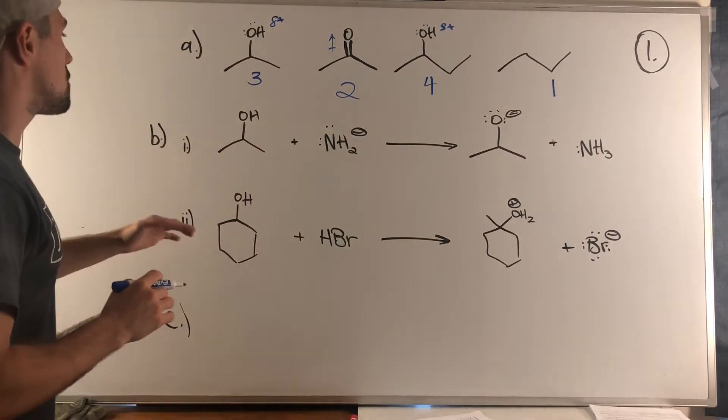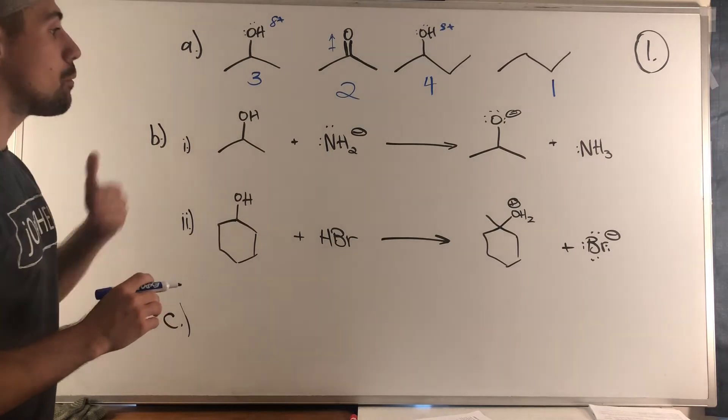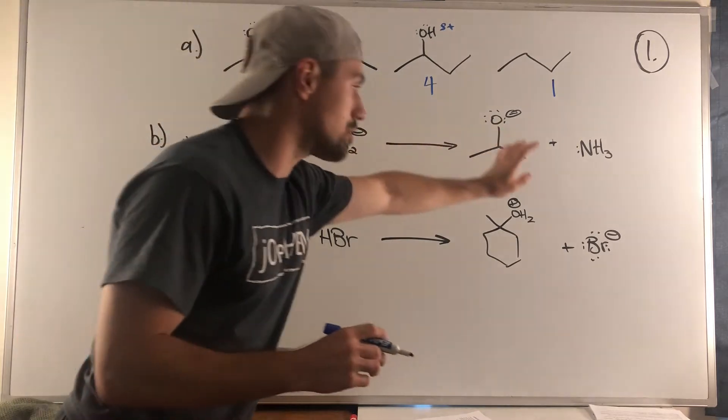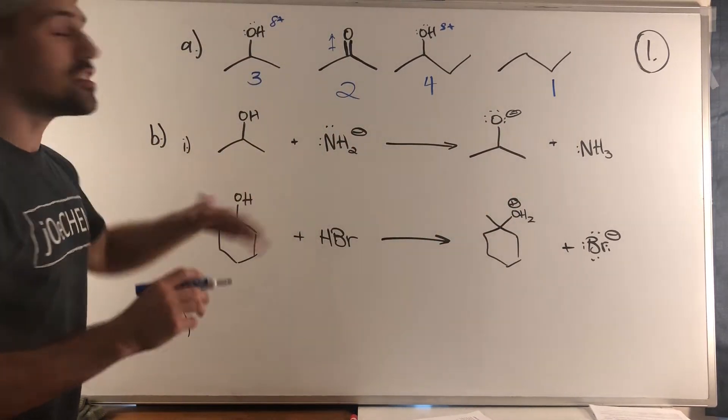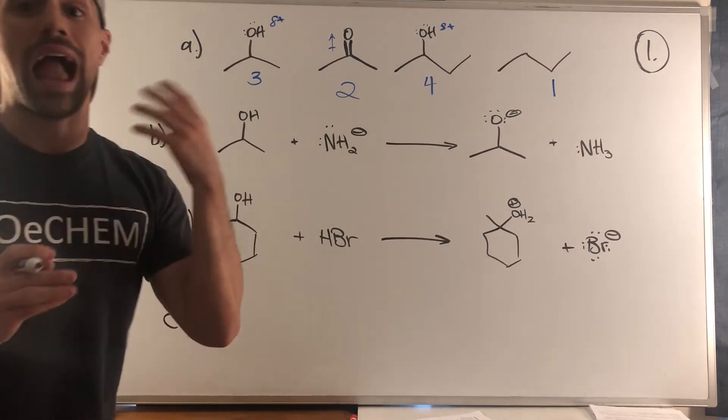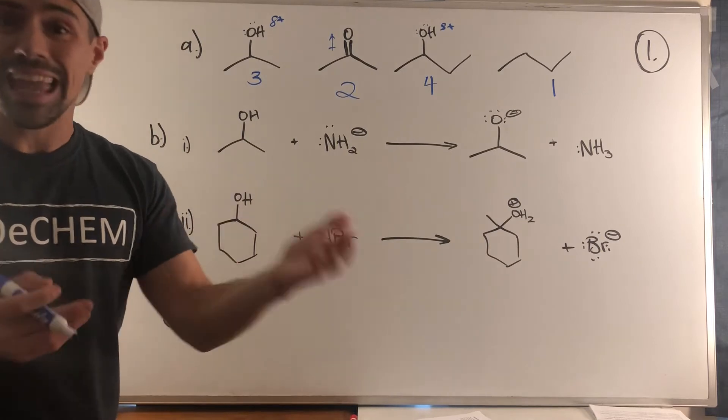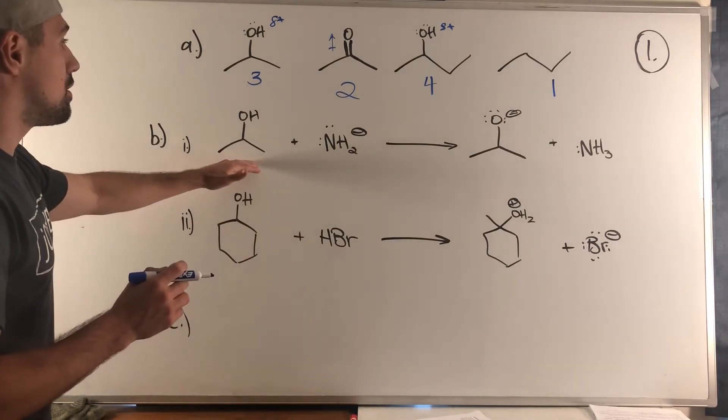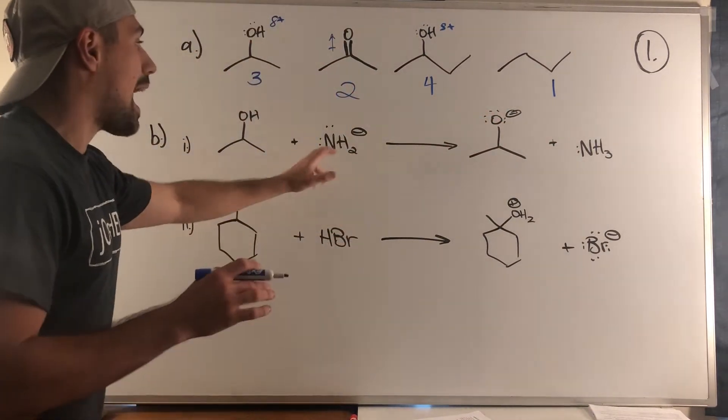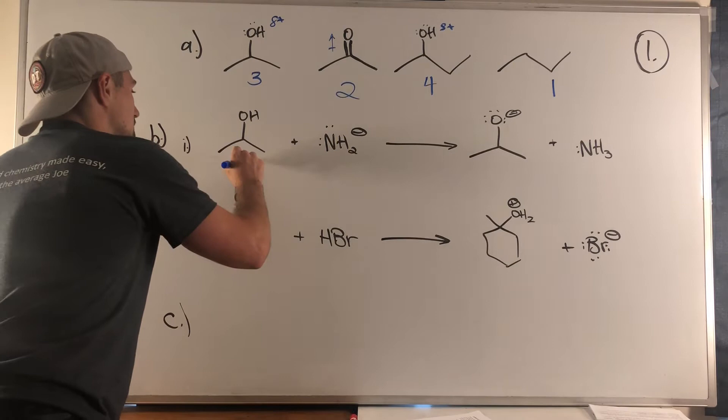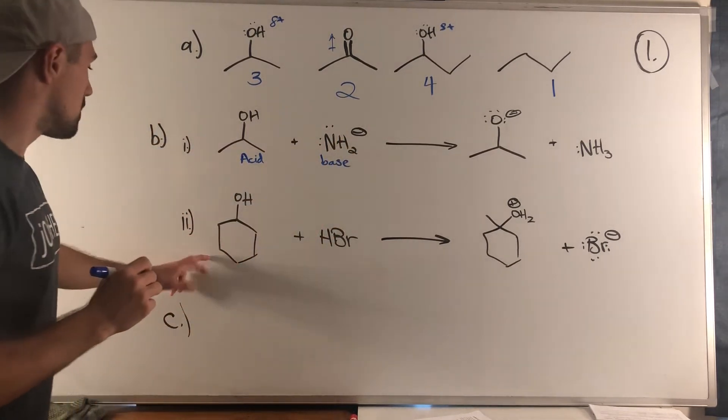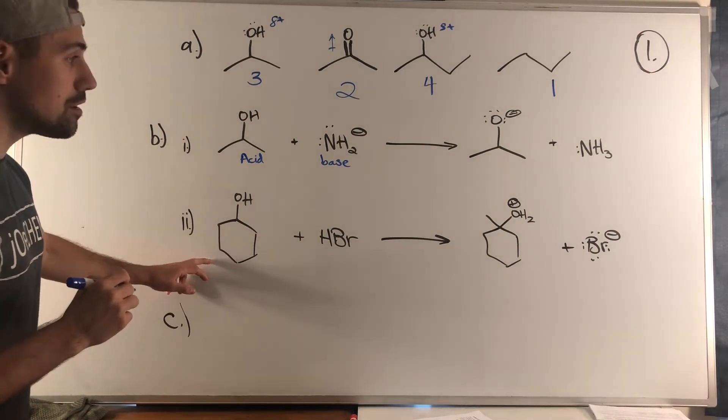For part B we need to label the acids and bases in these reactions. This is to highlight the dual nature of alcohols being able to act as both a base and an acid. In this reaction, the alcohol is losing H+, being abstracted by NH2-, so this is the acid and this is the base.